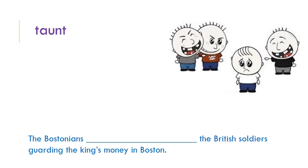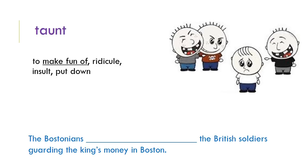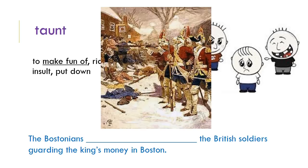Your next term is the word taunt. Taunt means to make fun of, ridicule, insult, or put down a person — think of bullying. Taunting is an action word meaning to be mean to someone. In context, the Bostonians actually taunted the British soldiers guarding the king's money in Boston. During the Boston Massacre, a mob was throwing snowballs and rocks at British soldiers, making fun of them. In retaliation, the British soldiers shot into the mob and killed several people. It all began because of a taunting mob.